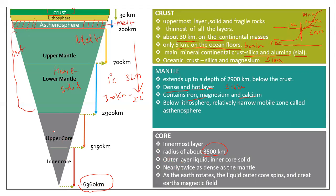The outer core is in liquid form because the temperature continues to increase at that depth, causing the rocks to melt. The inner core, however, is again solid. The reason it is solid is because of the enormous pressure — there are very dense rocks and extreme pressure at that depth.